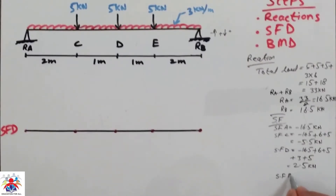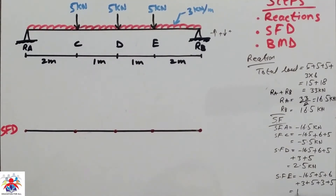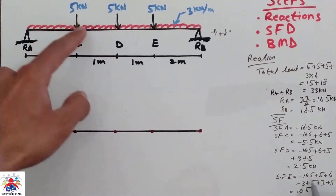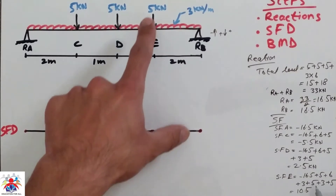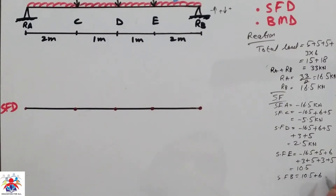Shear force at point E: minus 16.5 plus 5 plus 5 plus 6 plus 3 plus 3 plus 3 plus 5 equals 10.5 kilonewton. Then shear force at point B: 10.5 plus 6 minus 16.5 equals 0, which confirms our calculation is correct.